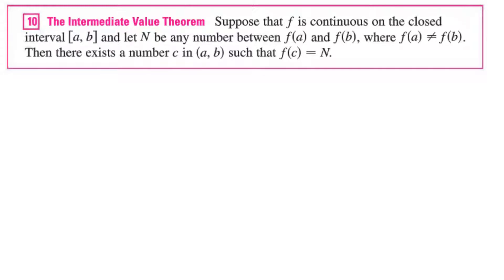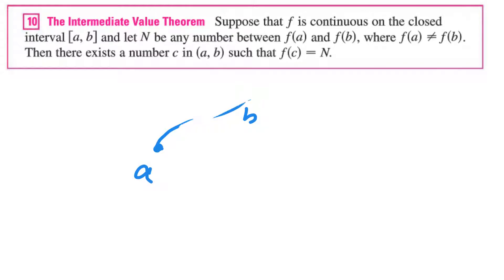What we're saying here is that if we have some function that's continuous and we know we have two points a and b, we know that if we're trying to figure out if there's some value on that graph that's between the y-values, it exists because it's continuous. So between this y-value and this y-value, every y-value between them does exist — that's basically what this is saying.